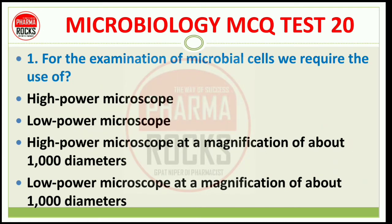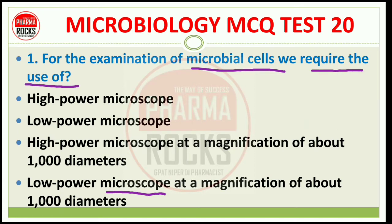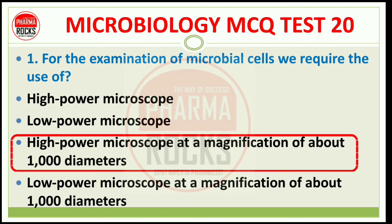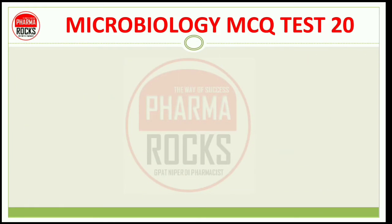Microbiology के लिए सबसे important tool जिसको हम कह सकते हैं वो है microscope. For examination of microbial cells, we require the use of which type of microscope? High power, low power, high power with magnification of 1000 diameters, or low power with magnification of 1000 diameters? The right answer for this MCQ is option number C: High power microscope at magnification of about 1000 diameters.